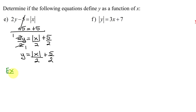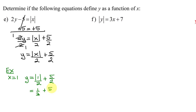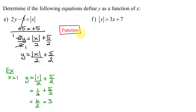Let's pick x = 1: y = |1|/2 + 5/2 = 1/2 + 5/2 = 6/2 = 3. So one x value gave one y value. This equation defines y as a function of x.